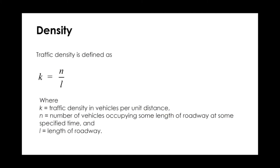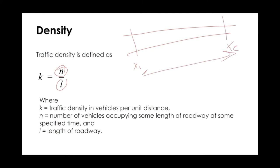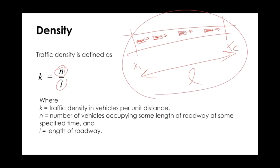Moving on to density, density is the number of vehicles observed over a specific length of road. Imagine flying over a road from X1 to X2 with length L, or using a drone or overhead camera. If I count the vehicles I see on that specific length divided by L, that gives me density — for example, 4 vehicles over length L.